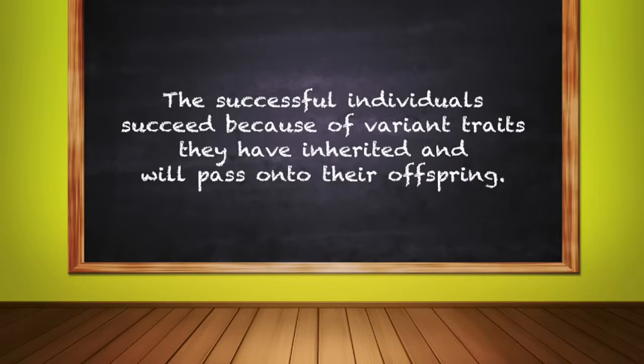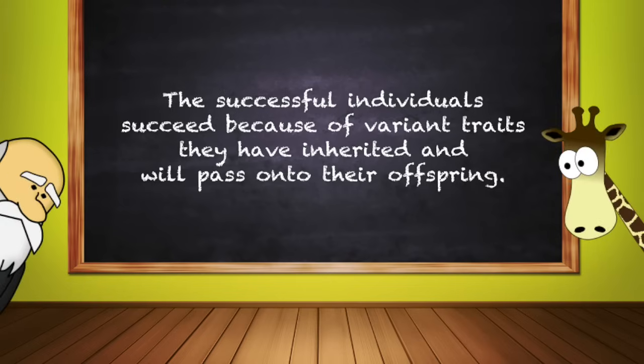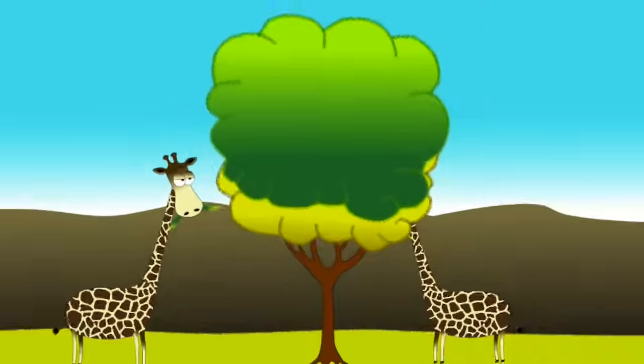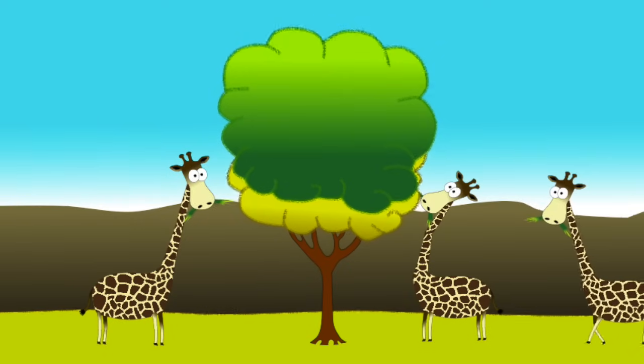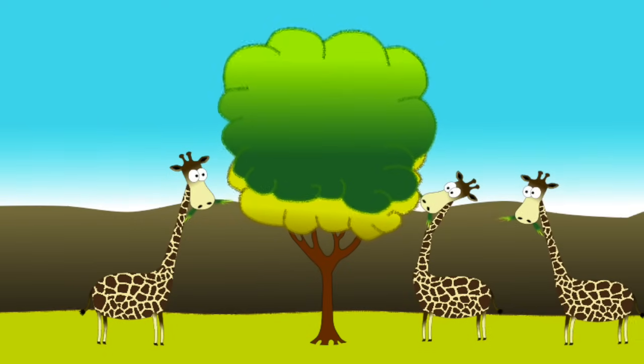Condition number four: The successful individuals succeed because of variant traits they have inherited and will pass on to their offspring. Giraffes with the longer neck advantage are in better health and able to pass this feature to their offspring. Because this trait is more successful than shorter necks, more individuals in the population have it.